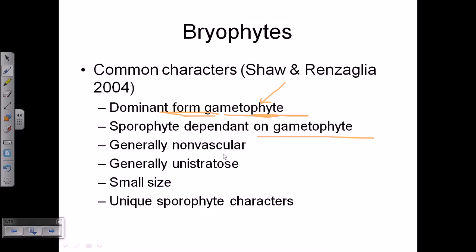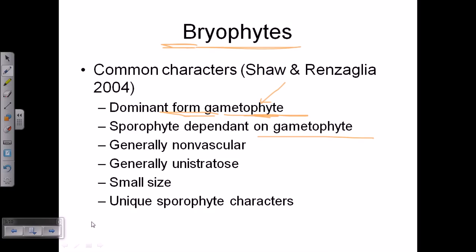Bryophytes are generally non-vascular plants. They do not have any kind of vascular system — no xylem or phloem — and that is why they are very small and short. They have some unique sporophyte characteristics that are found only in this bryophyte generation and not in any plants that come after.